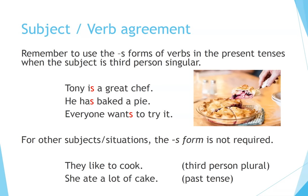Subject-Verb Agreement — remember to use the S forms of verbs in the present tenses when the subject is third person singular. For example: Tony is a great chef. He has baked a pie. Everyone wants to try it. For other subjects or situations, the S form is not required. For example: They like to cook (third person plural). She ate a lot of cake (past tense).